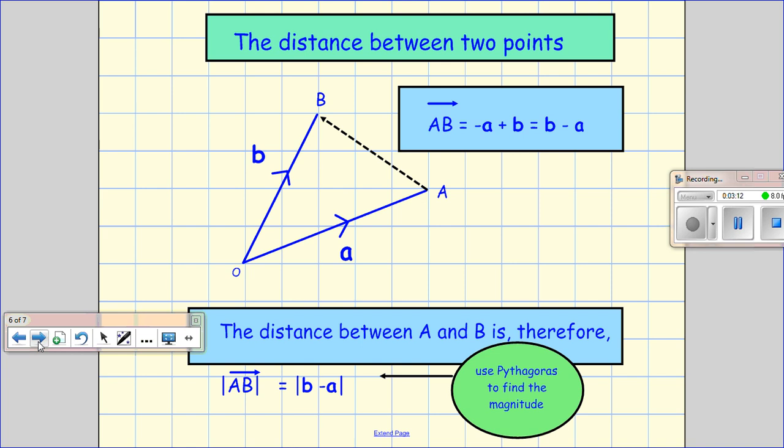Okay, so the distance between two points. So if I want to find the distance between A and B, because I've got a point at A and a point at B, I can use A as a position vector from the origin to A and B as a position vector from the origin to B. And I want to get the vector from A to B.